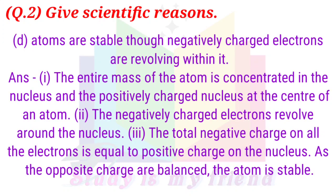Question 2D: Atoms are stable even though negatively charged electrons are revolving within them. Answer: The entire mass of the atom is concentrated in the nucleus with a positive charge. The total negative charge on all the electrons is equal to the positive charge on the nucleus. As the opposite charges are balanced, the atom is stable.